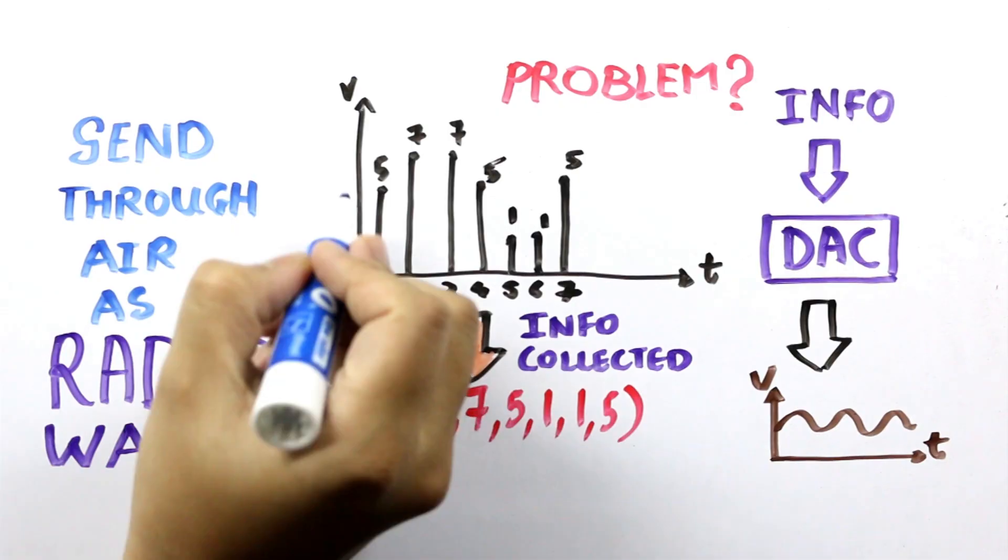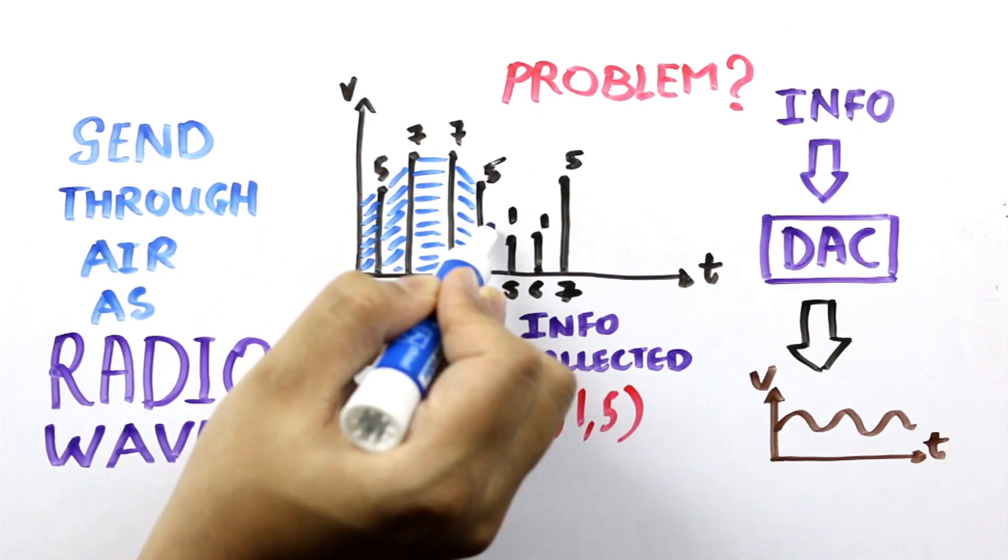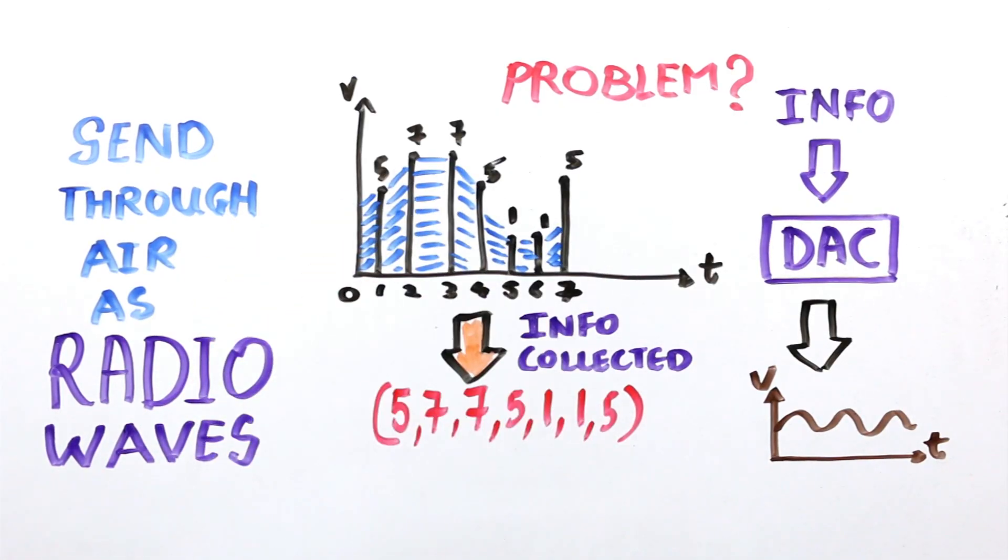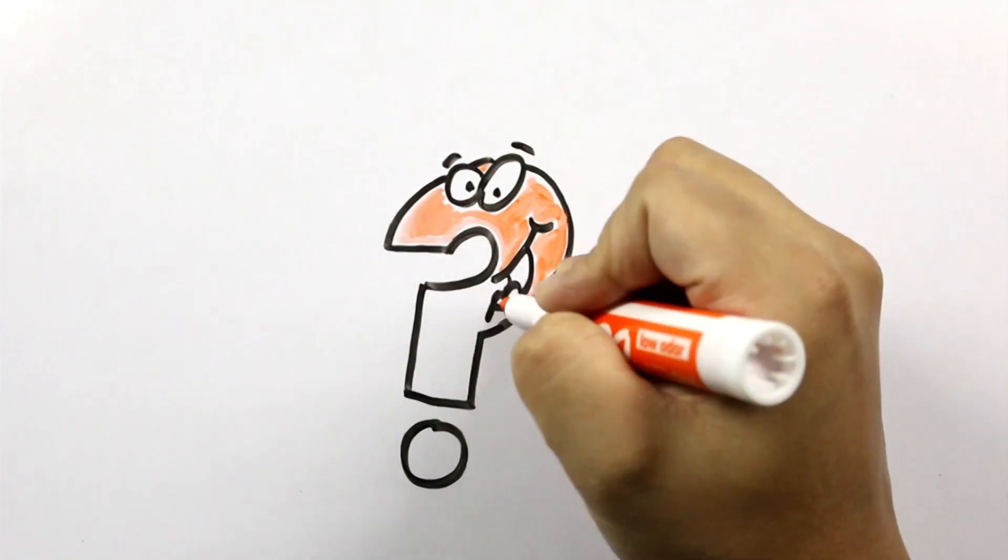But do you see the problem here? Some information is going to get lost in the process of converting the sound to digital and back again. Because the measurement made here doesn't precisely capture the shape of the original wave. It's only a crude approximation. What can we do about this?